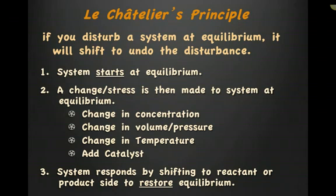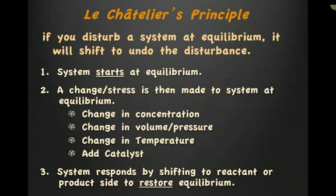At this point, number two, a change or stress is made to this system at equilibrium — a change in concentration, or volume and pressure, or temperature, or we add a catalyst. How is this going to affect the system that's at equilibrium? Number three, the system responds by shifting to the reactant or product side to restore equilibrium.